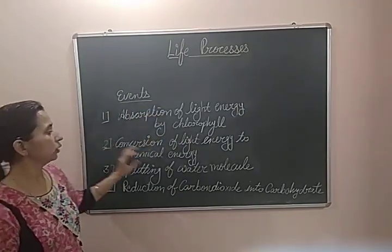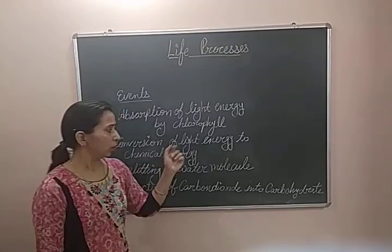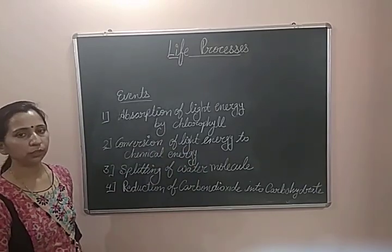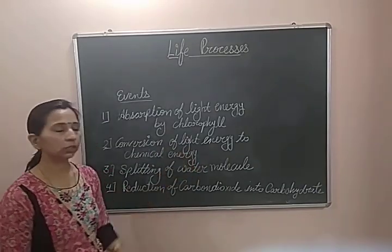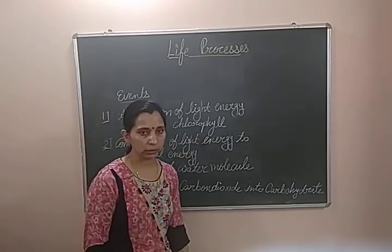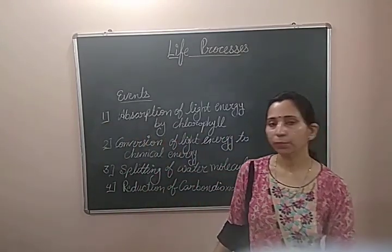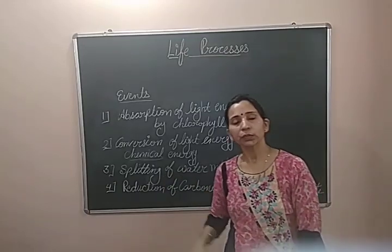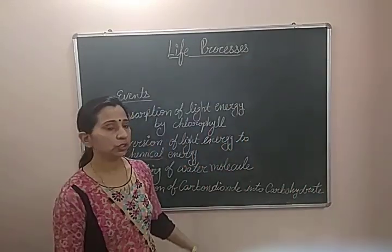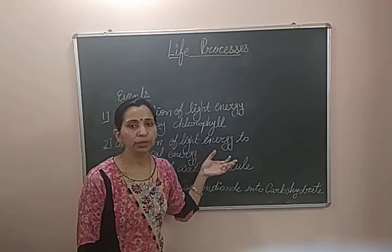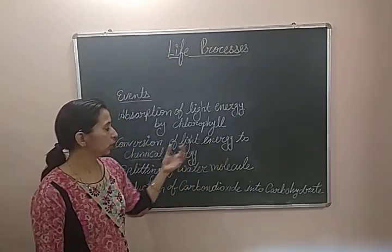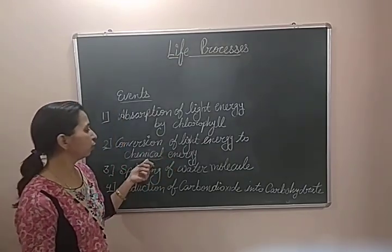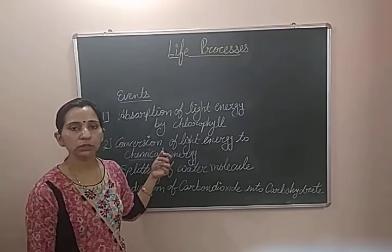The second step is the conversion of light energy to chemical energy. This is the process in which the solar energy — the light energy which comes from the sun — is converted into chemical energy. Chemicals like glucose are formed here. Light energy is utilized to form ATP, which is also formed in the process of photosynthesis. So solar energy is converted into the form of chemical energy by forming these chemicals.